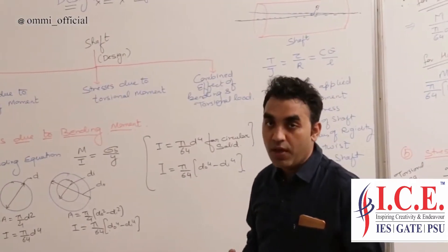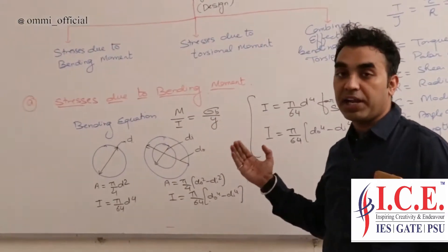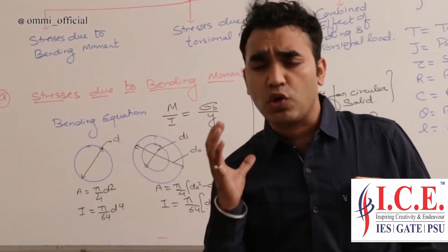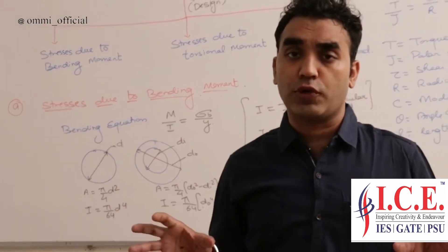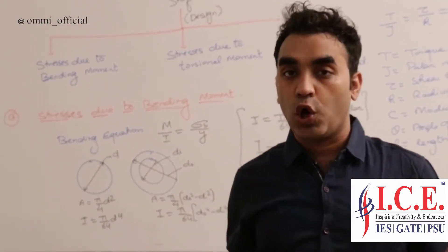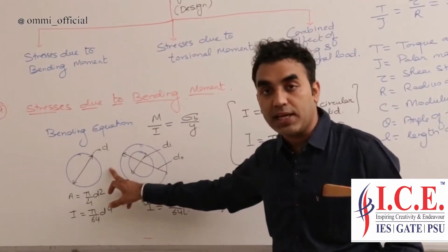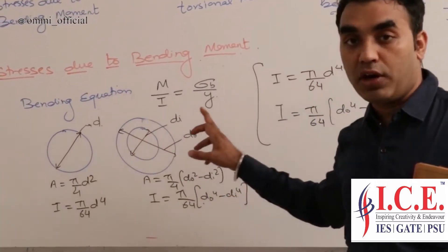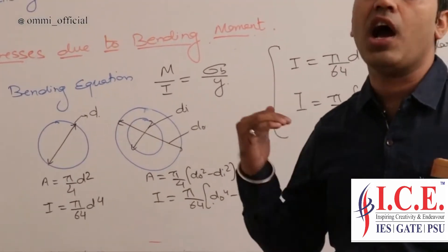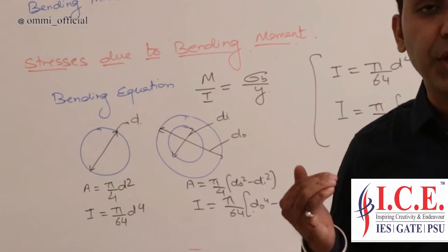Now we come to the first type: stress due to the bending moment. First of all, note that we have two different sorts of shaft material — first is solid, second is hollow. If we have the solid, the diameter is a single value, that is small d. If we have a hollow, we have two diameters — inner and outer — represented by d_i and d_o.